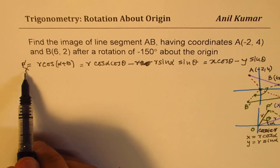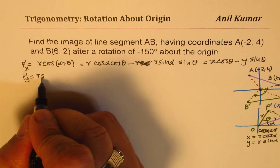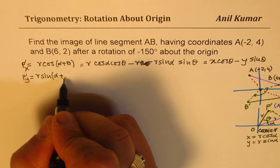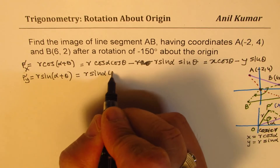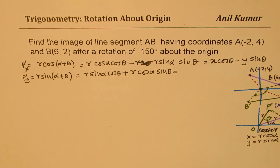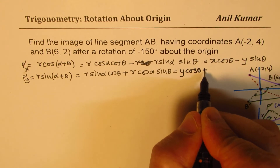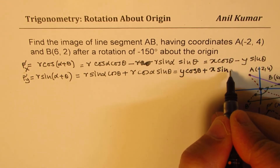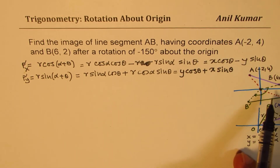Similarly, I can write the Y coordinate value. For P dash, the Y coordinate will be R·sin(alpha + theta), which expands to R·sin(alpha)·cos(theta) plus R·cos(alpha)·sin(theta). Since R·sin(alpha) = Y and R·cos(alpha) = X, this gives us Y·cos(theta) plus X·sin(theta). So the formula for the Y coordinate of the rotation is: Y' = Y·cosθ + X·sinθ. We are going to use these formulas to find our image points.